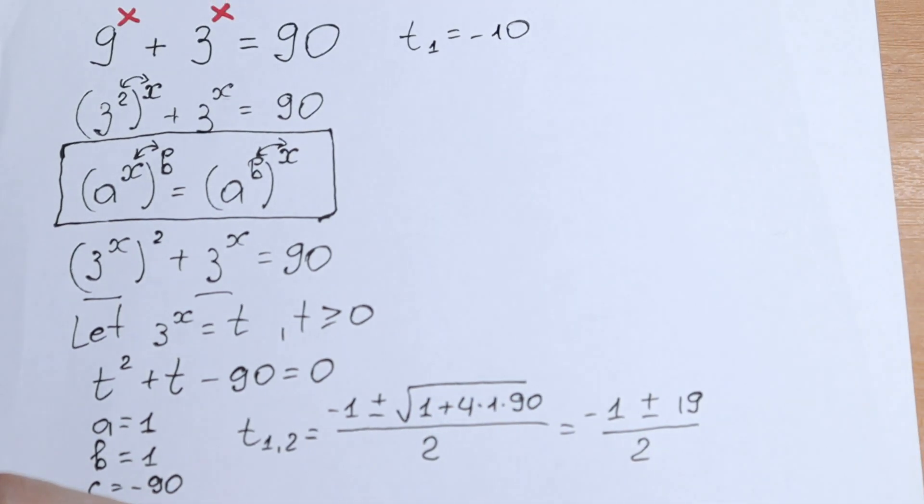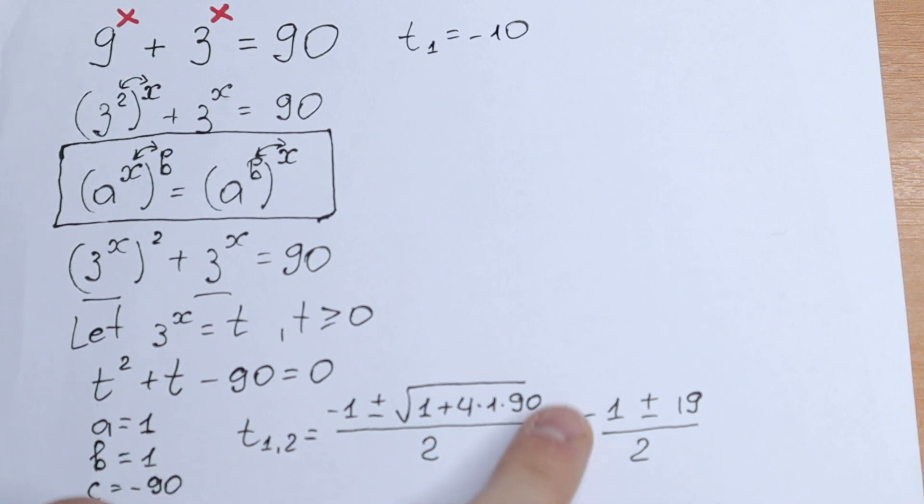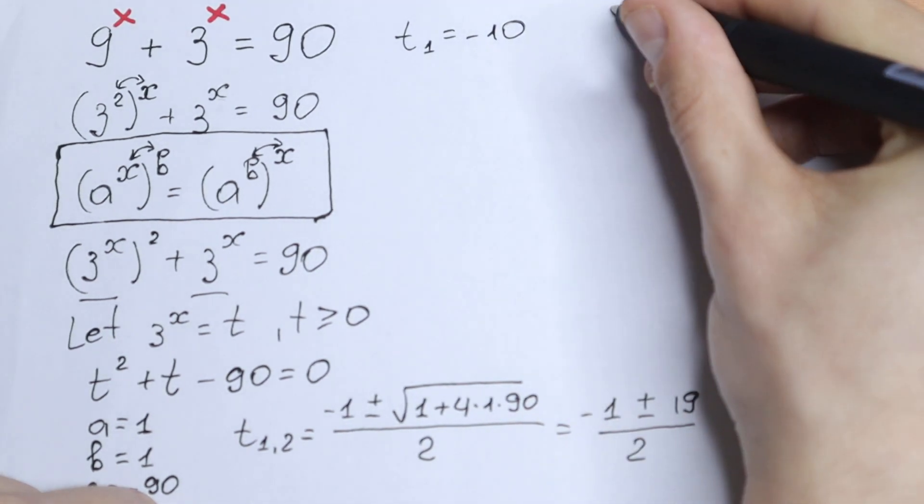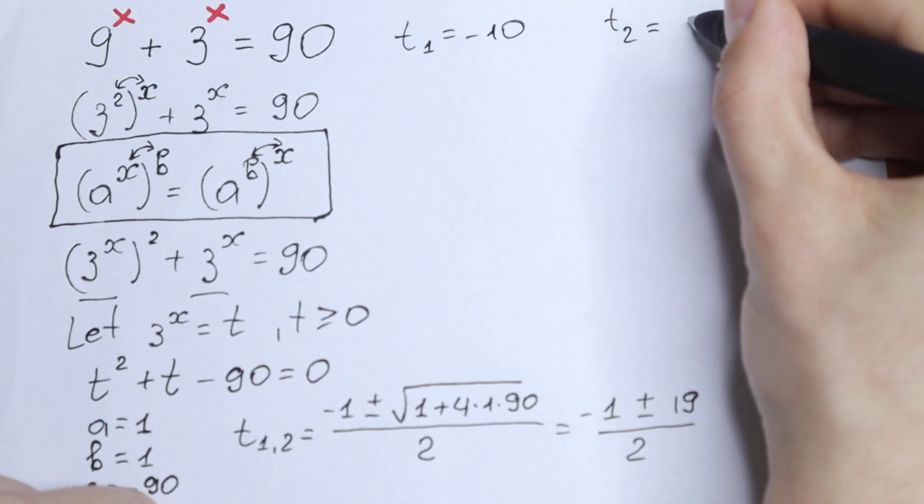And let's find our t2. t2 will be equal to the same but with the plus sign. Minus 1 plus 19. It will be 18 over 2. It will be 9. So we will have that t2 equal to 9.